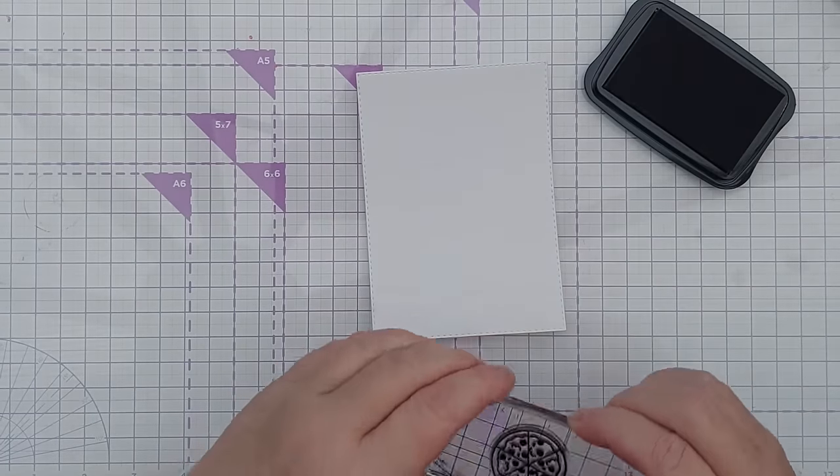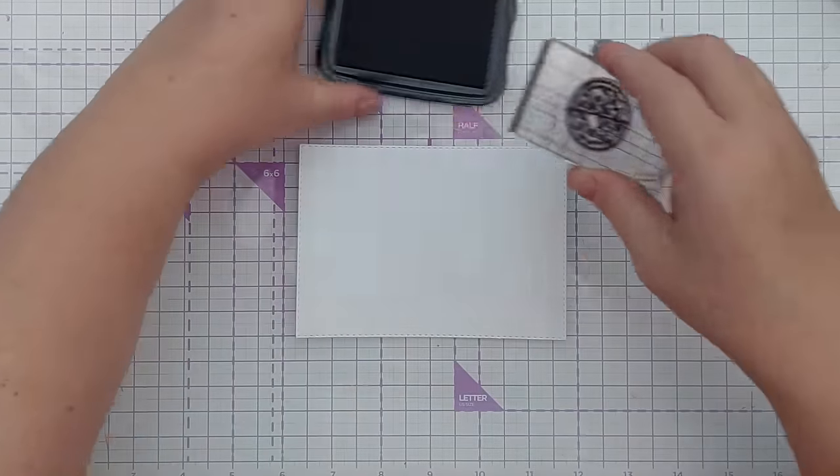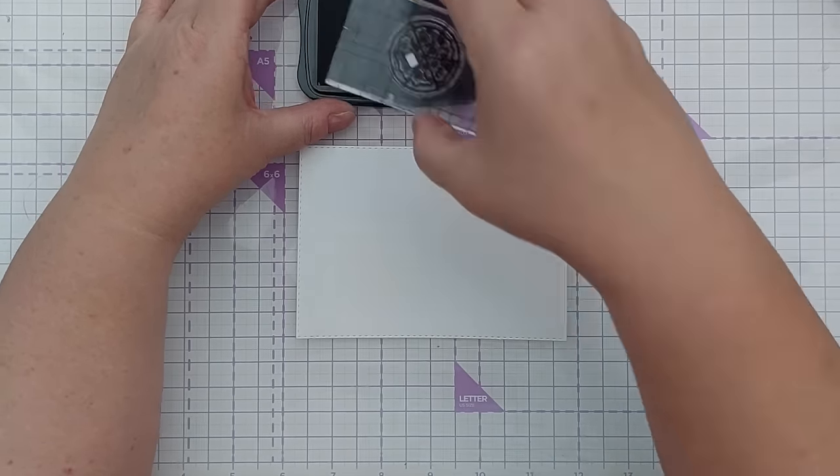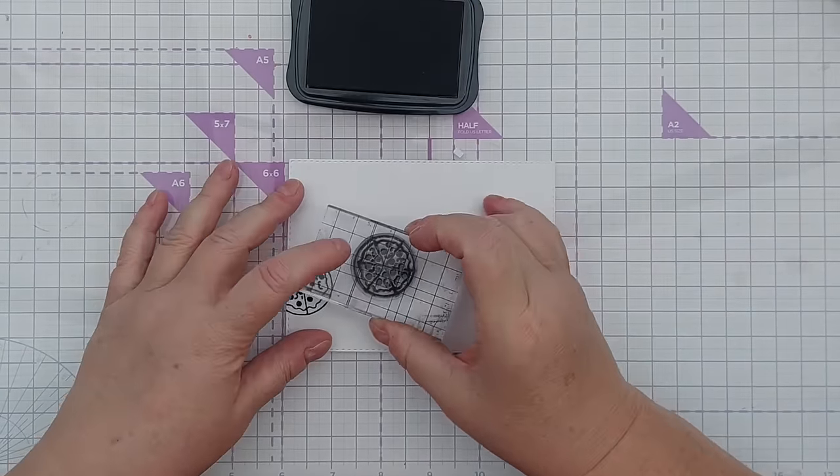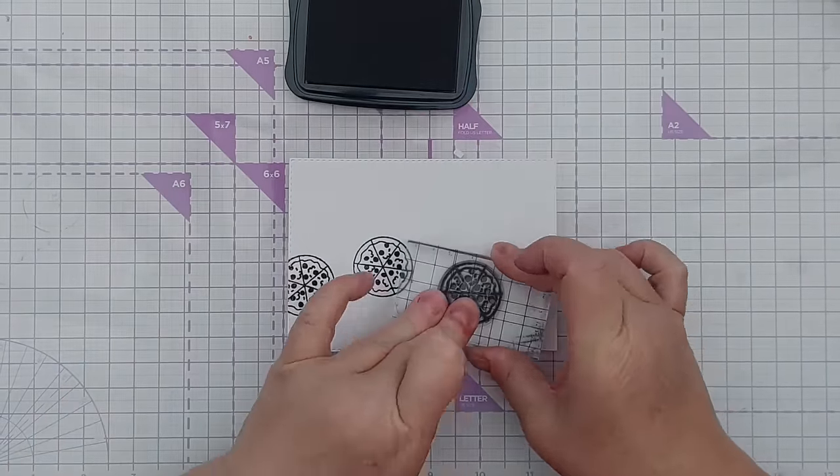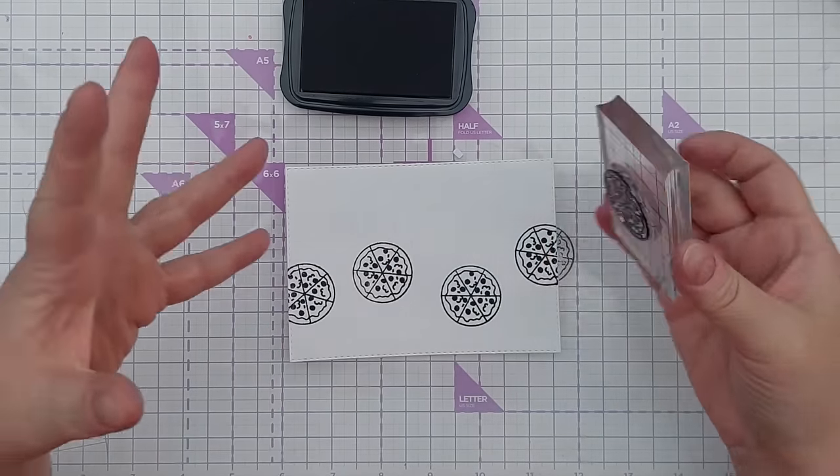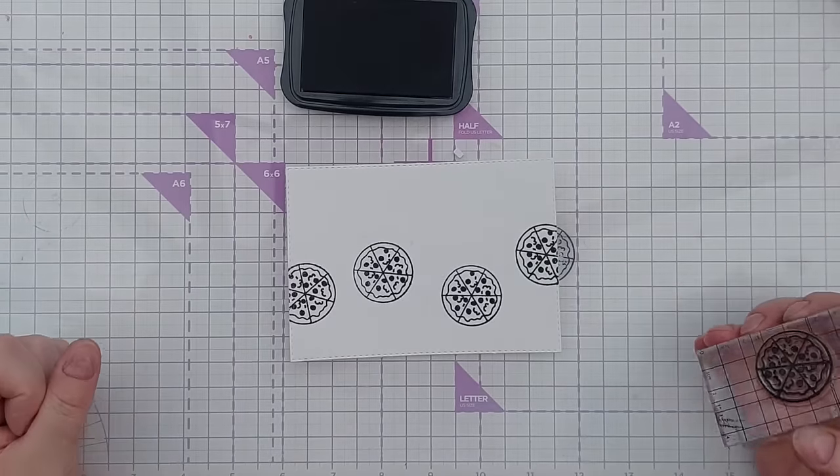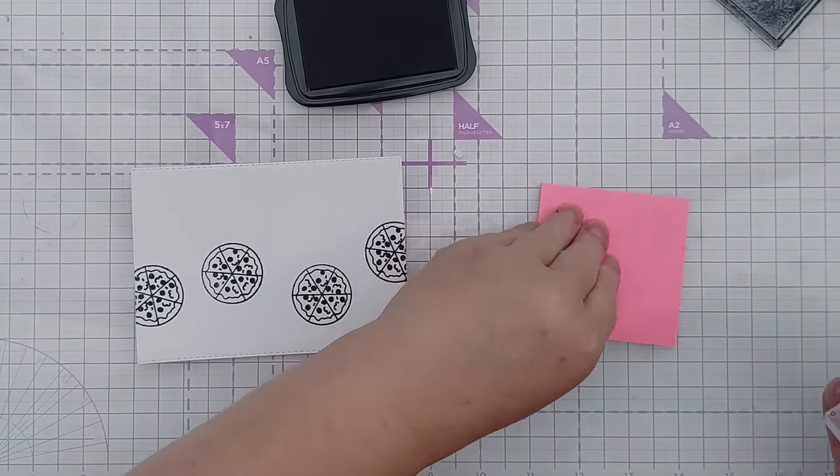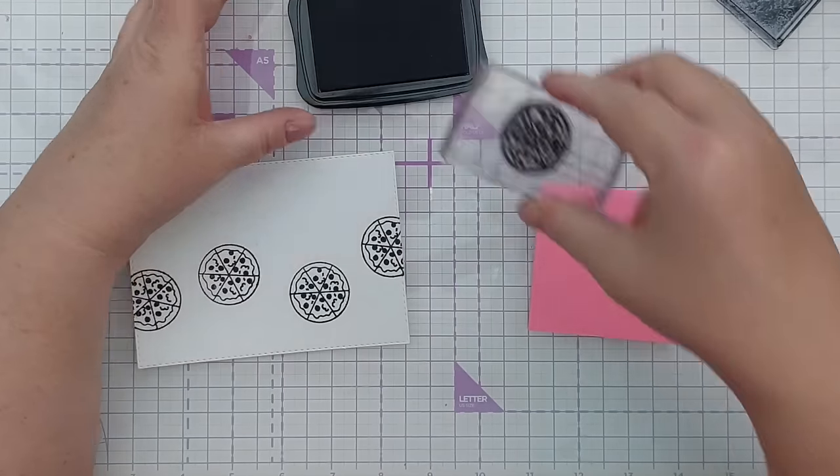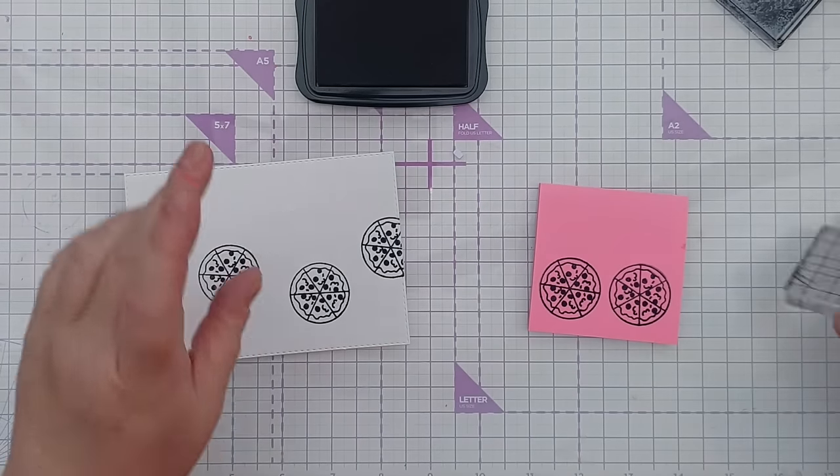I'm going to start with this pizza stamp and I've got a bit of mixed media paper here and some Stazon ink. This is a permanent waterproof ink once dry. I've chosen to use this one because I want to do some wet water-based coloring. I've stamped four higgledy-piggledy pizzas there and I'm going to stamp two more on some post-its and cut these out to make masks.